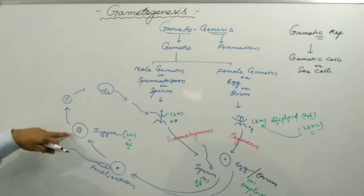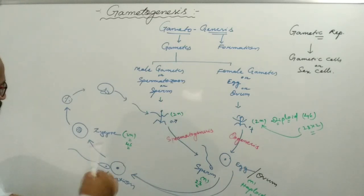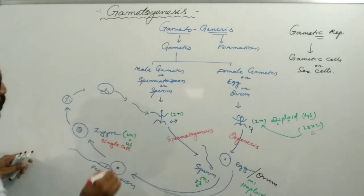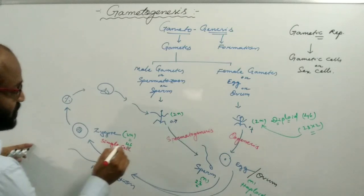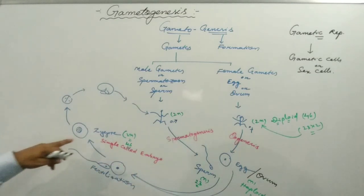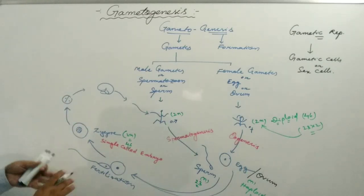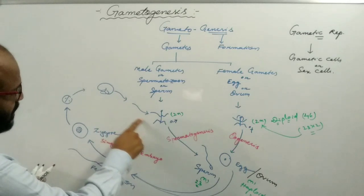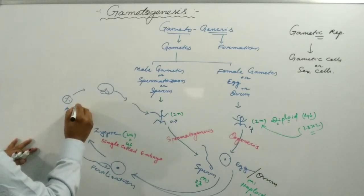By the repeated mitotic division of the zygote, which is a single cell, a multicellular embryo or fetus is produced, which develops into a young one. The zygote is a single-celled organism. The repeated mitotic division of the zygote is known as cleavage.